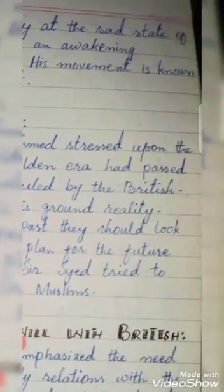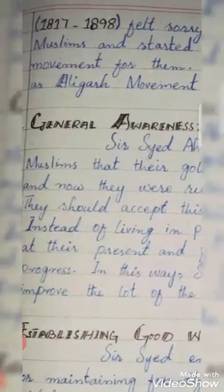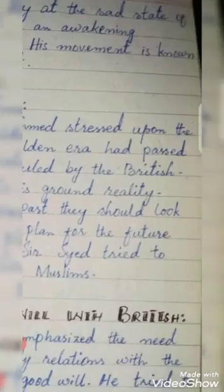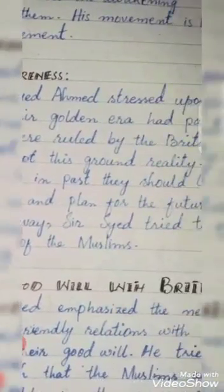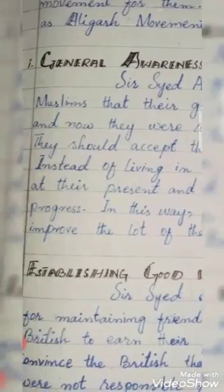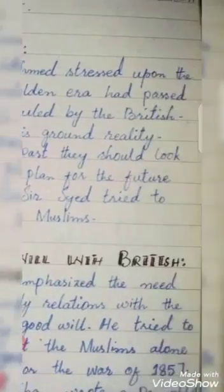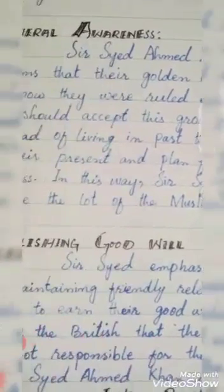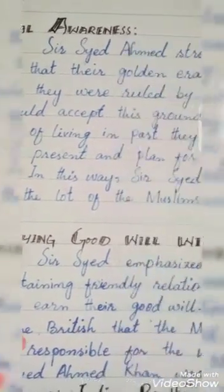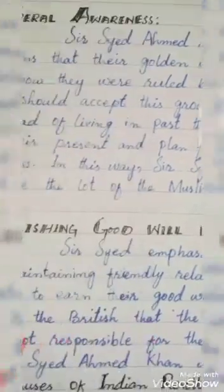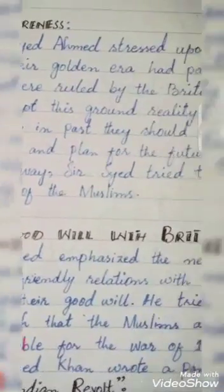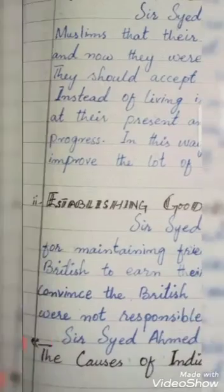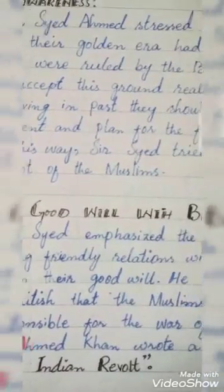First heading: General Awareness. Sir Sayyid stressed upon the Muslims that their golden era had passed and now they were ruled by the British. They should accept this ground reality. Instead of living in the past, they should look at their present and plan for the future progress. In this way, Sir Sayyid tried to improve the lot of the Muslims.